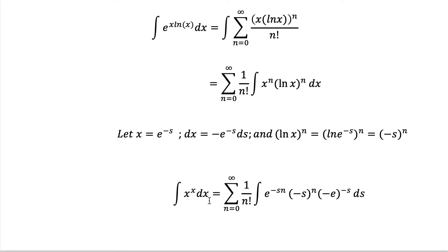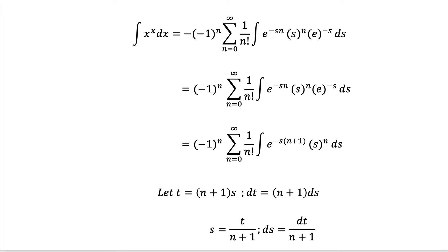Now performing this substitution, the integral of x^x dx equals the sum from n equals 0 to infinity of 1 over n factorial, times the integral where x^n is replaced by e^(-s) to the power n, giving e^(-sn). And (ln x)^n is replaced by (-s)^n. And dx is replaced by minus e^(-s) ds. We now have (-s)^n which is an alternating series, so we can factor out (-1)^n.